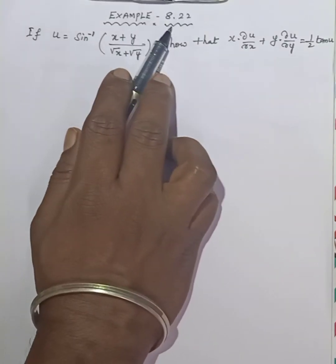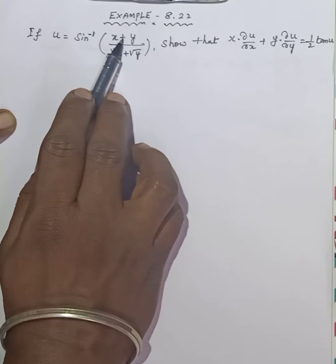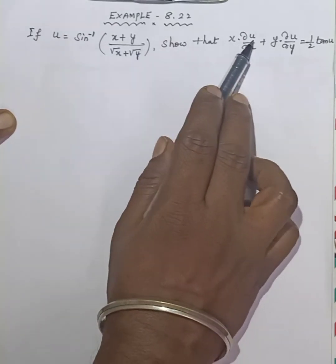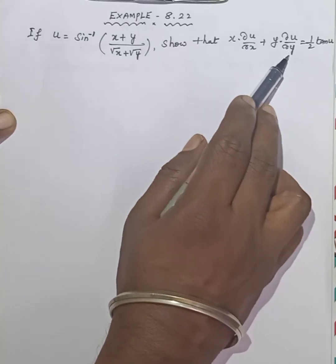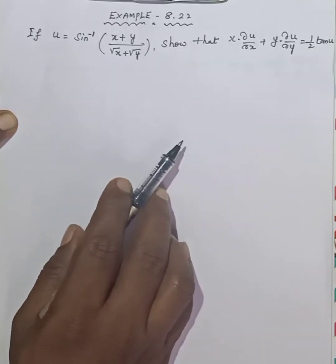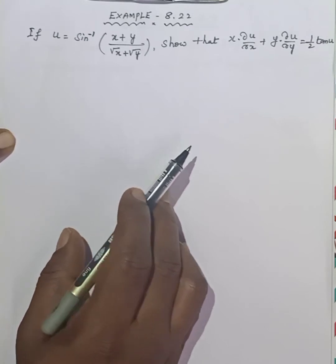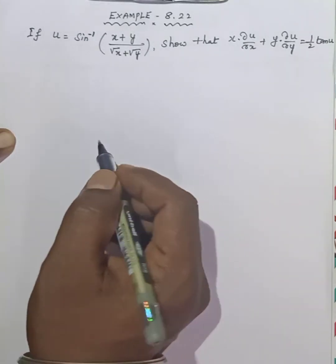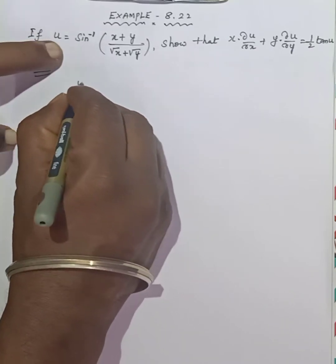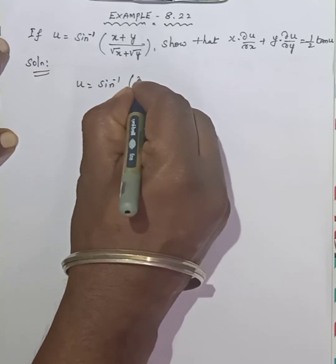Hi students. Example 8.22: If u is equal to sin inverse of (x plus y) divided by (root of x plus root of y), show that x times ∂u/∂x plus y times ∂u/∂y is equal to 1/2 times tan(u). This is Euler's theorem and involves a homogeneous function — first check the degree.